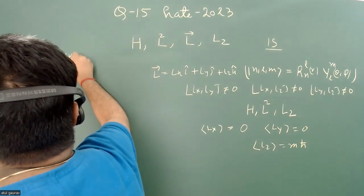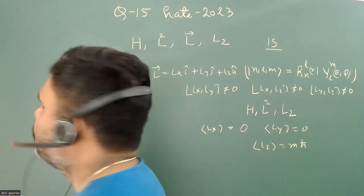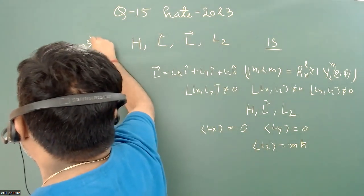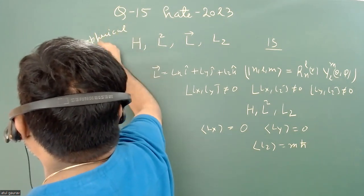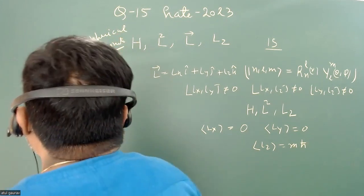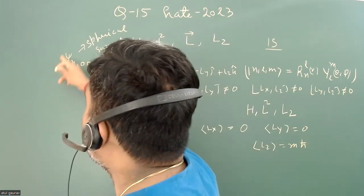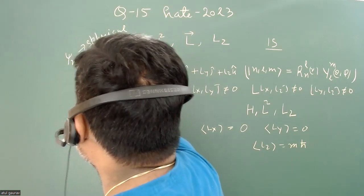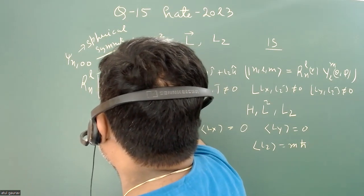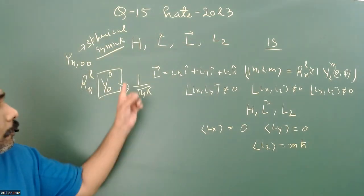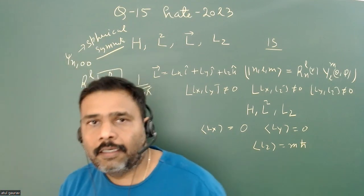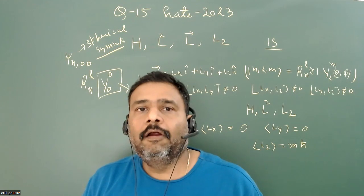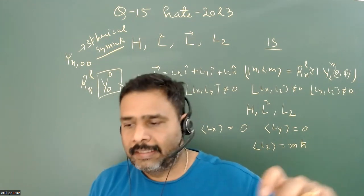Now let's go for a special state — the s-states of the hydrogen atom, which are energy eigenstates of the form |n00⟩. When we have this sort of state it is spherically symmetric. What is the meaning of spherically symmetric? For this sort of state we have radial wave function R_nl(r) and Y₀₀, and Y₀₀ is nothing but 1/√(4π), which has no dependency on θ and φ.